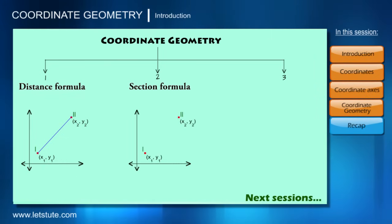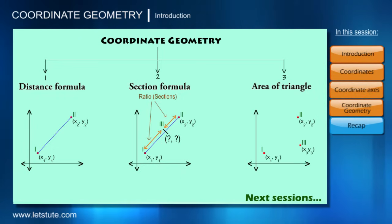Under this concept, when two points are given with their coordinates, we find the coordinates of a third point lying on the line segment joining them, dividing it into a given ratio. The third concept is area of triangle. In this concept, three points with their coordinates form a triangle, and we will see how to find its area. Let's have a recap of this session.